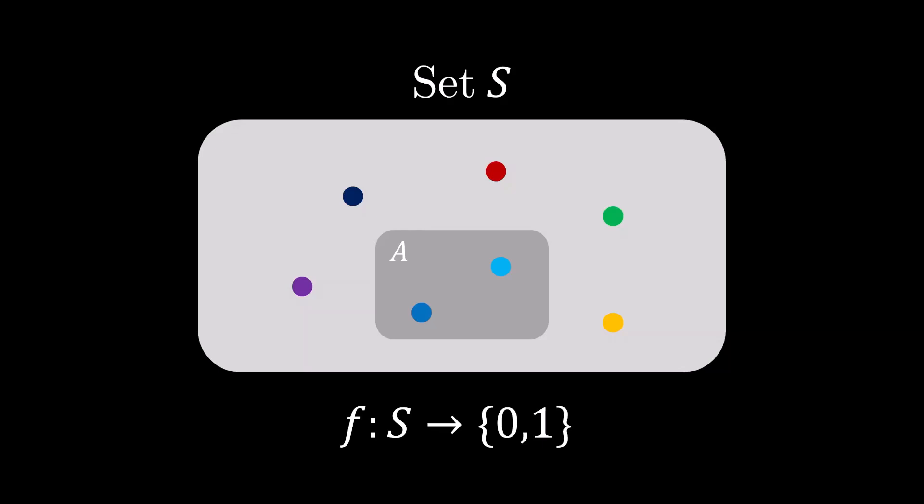In doing so, you are effectively assigning a number 0 or 1 to each element, where 1 indicates that the element lies in A. In other words, specifying a subset is the same as specifying a function from S to the set consisting of two elements 0 or 1.